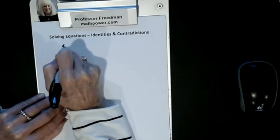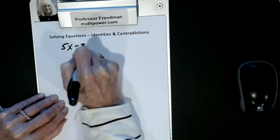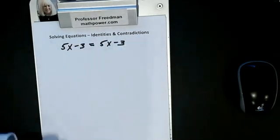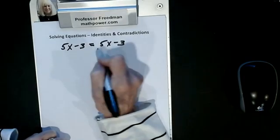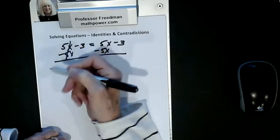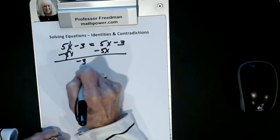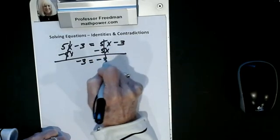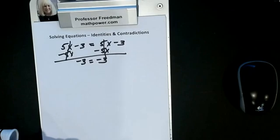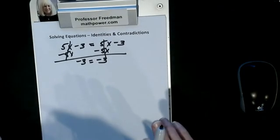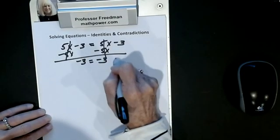So if I have 5x minus 3 equals 5x minus 3, I solve the equation — I want all x's on one side, numbers on the other. My x's cancel out, and I get negative 3 equals negative 3.